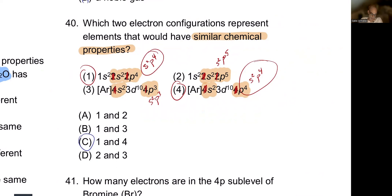Configurations 1 and 4 are in the same group — group 6 or group 16. Elements in the same group have the same valence electron configuration, which is why they have similar chemical properties.